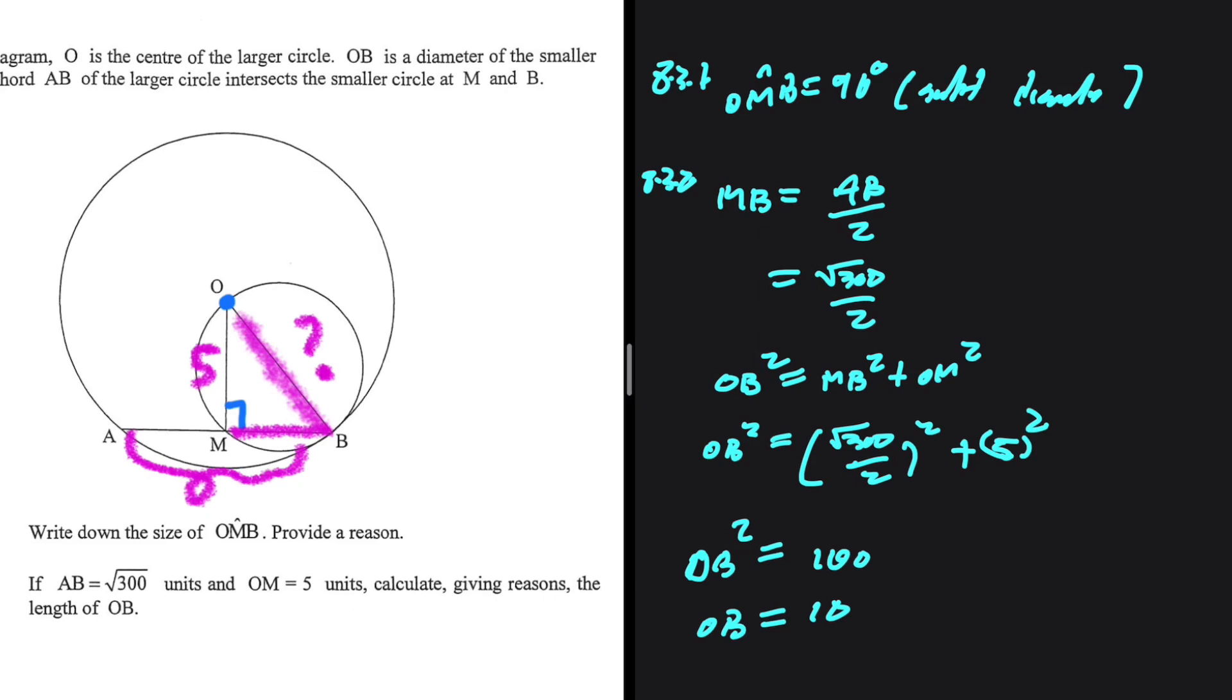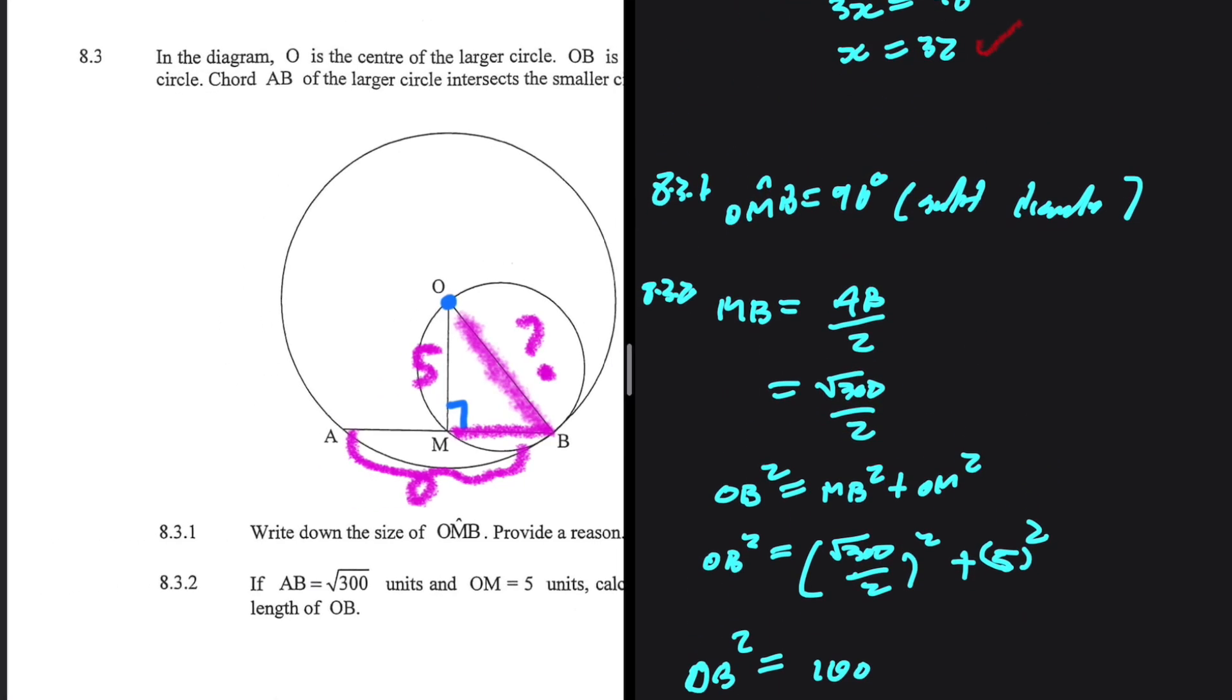So OB is equals to 10. If we take square roots on both sides, we get OB equals 10. So yeah, there we go. That is 8.3.2.